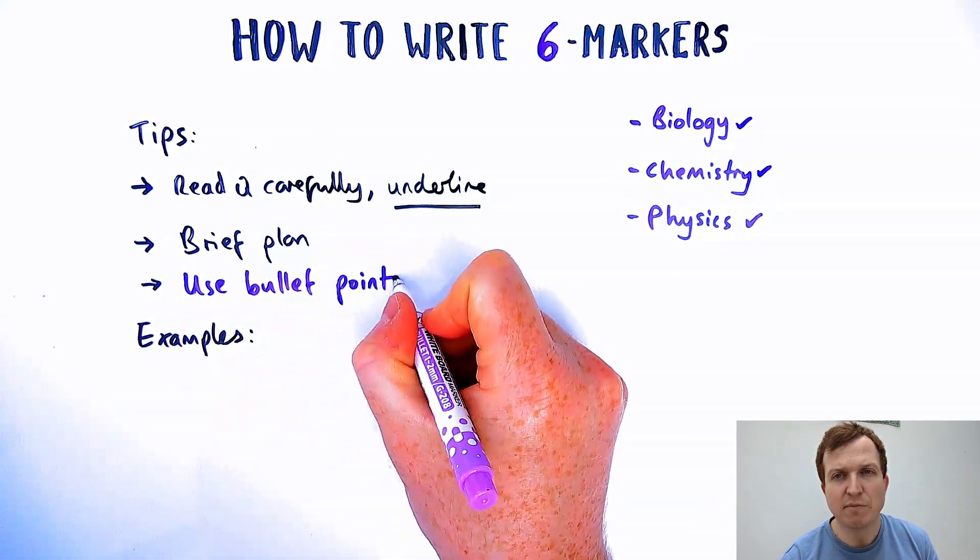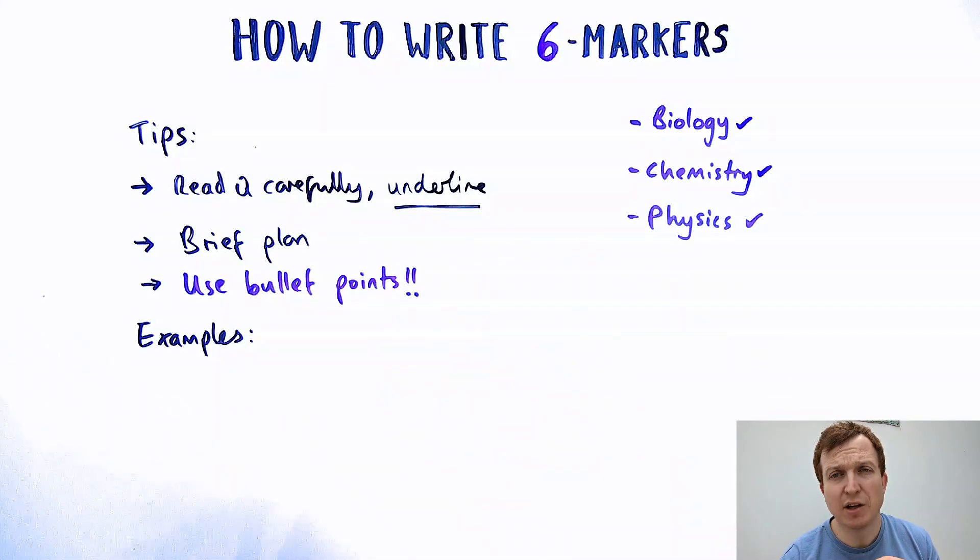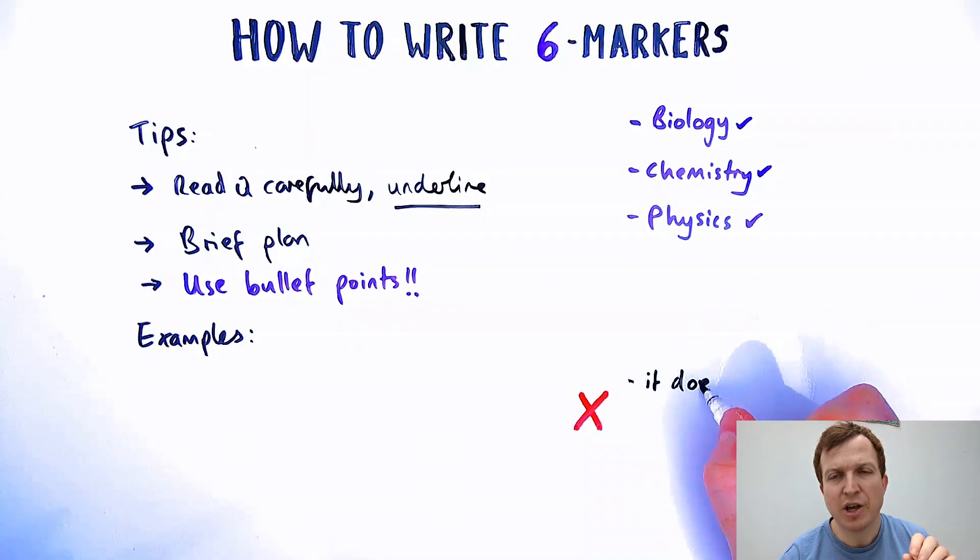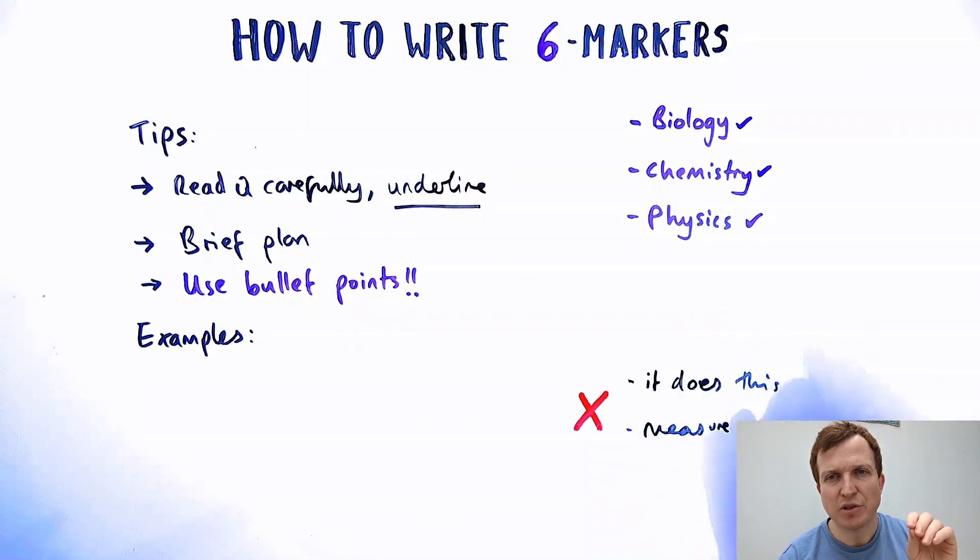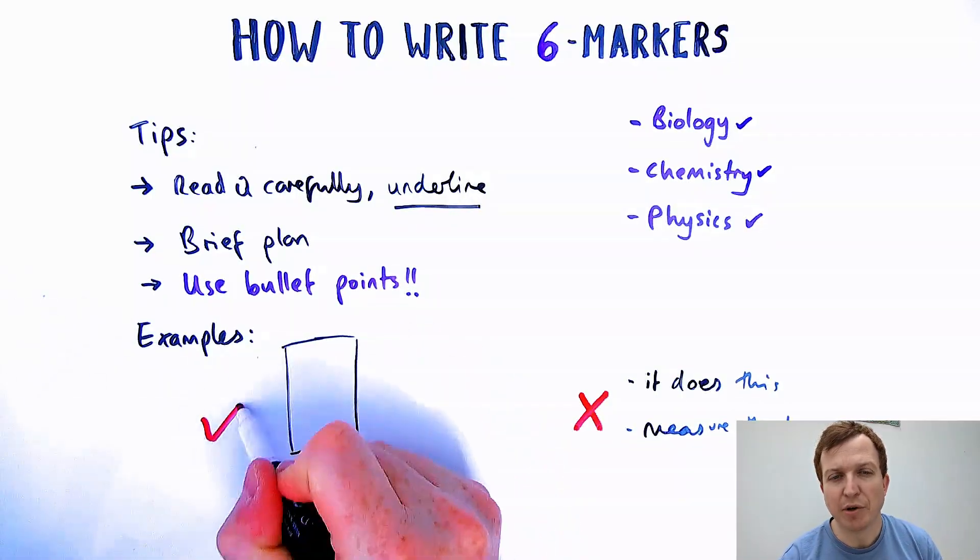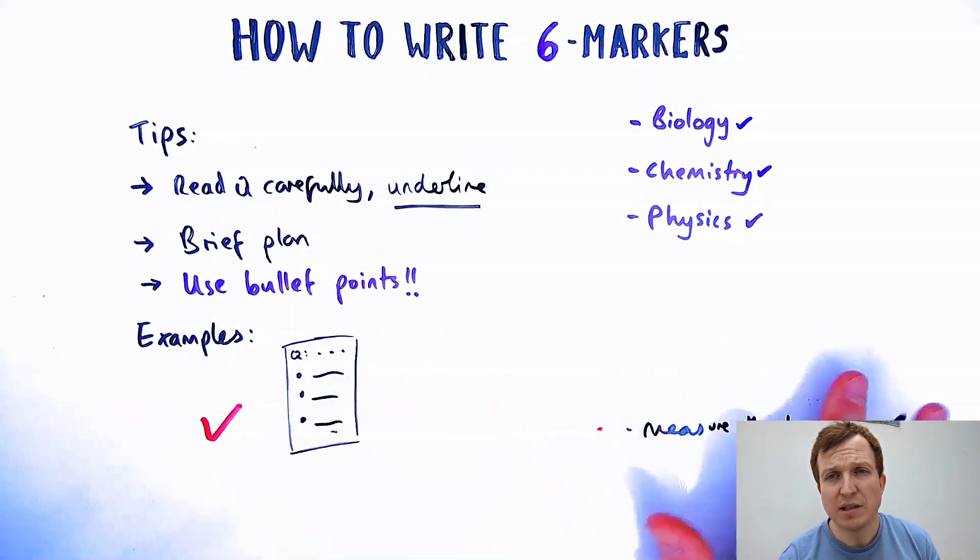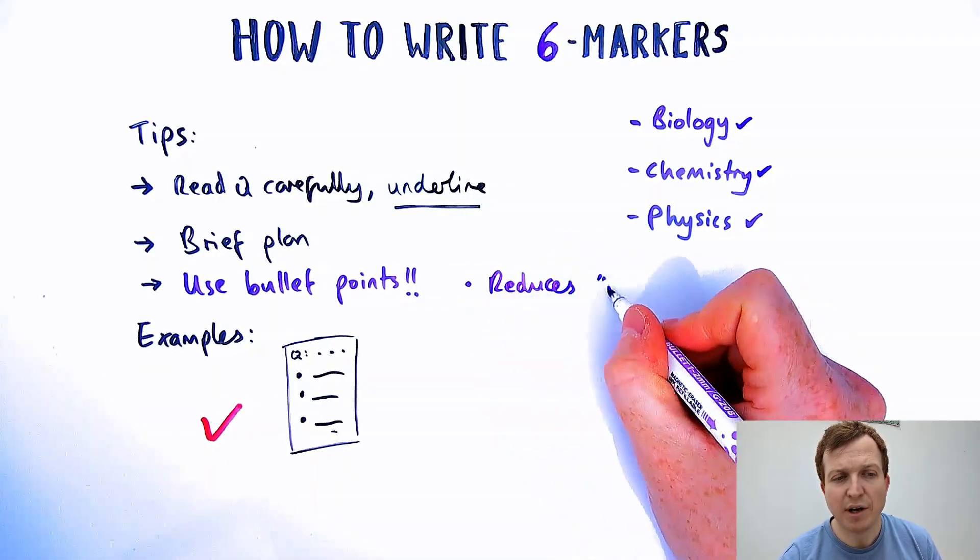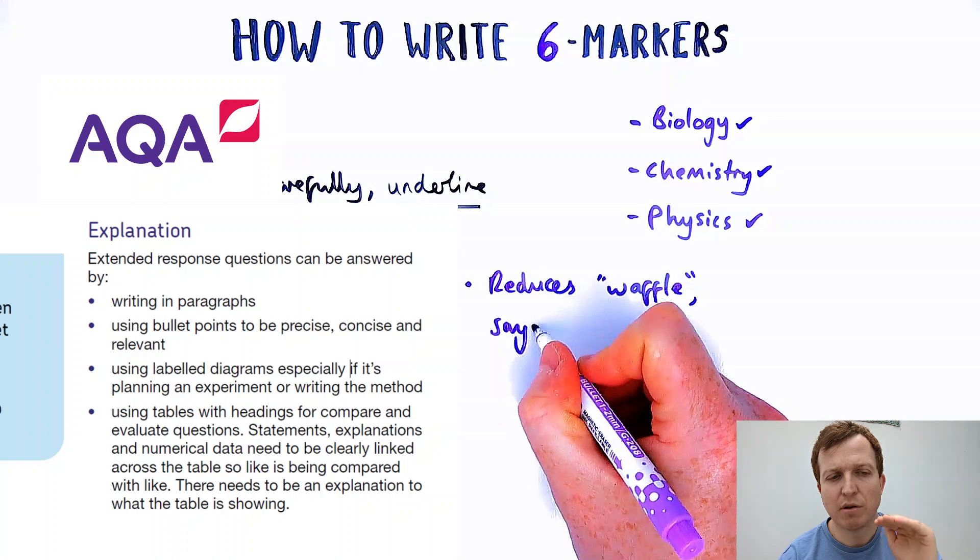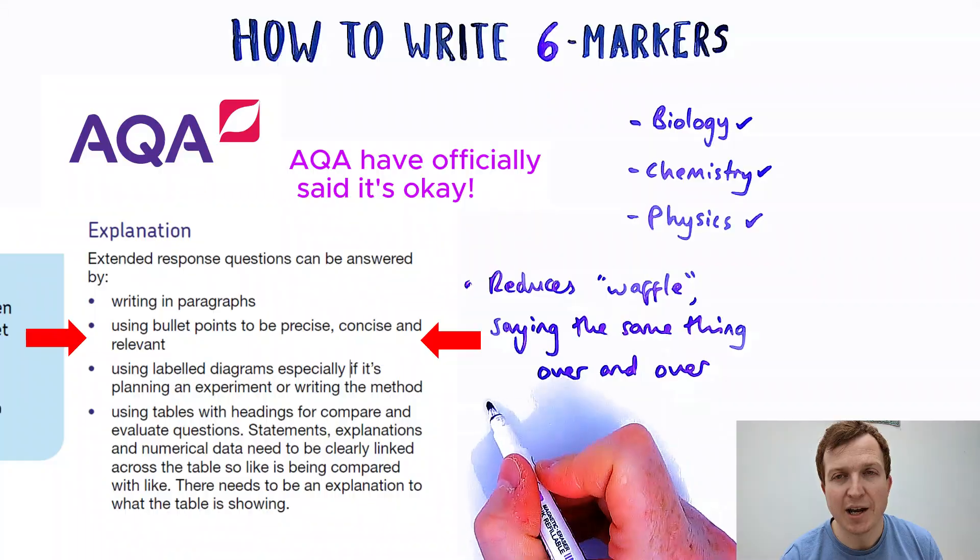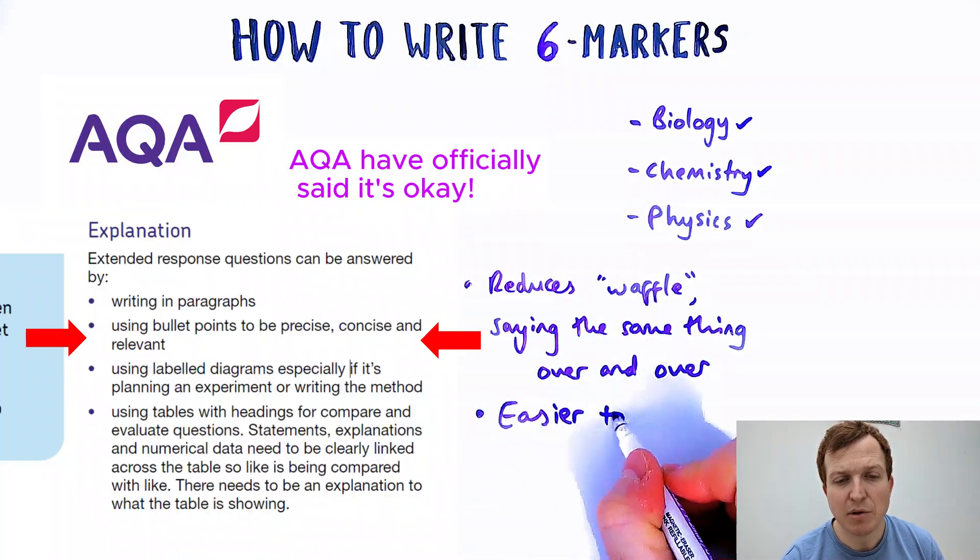And I would 100% use bullet points. As AQA have stated a couple of times, and other exam boards as well, it is absolutely fine to use bullet points or tables as long as it's written in a way that's clear, not just two words for each thing. The idea is it makes it a lot easier to mark for examiners and easier for you to write. Rather than writing stuff as a paragraph, write it in bullet points. It reduces waffle, saying the same thing over and over again.